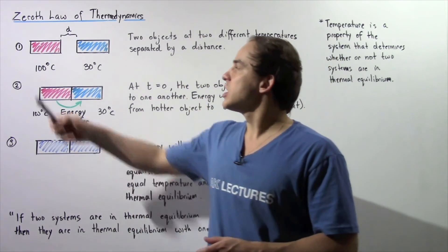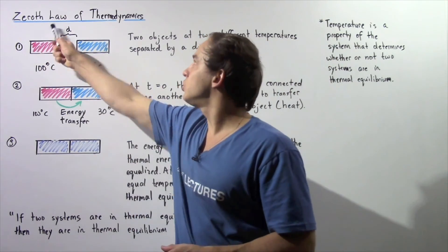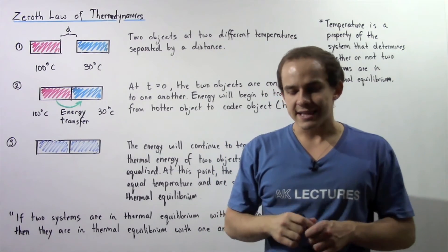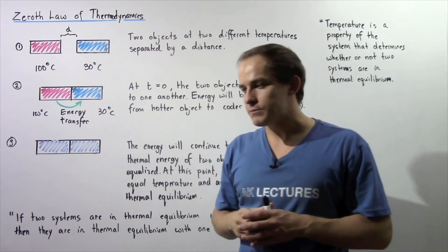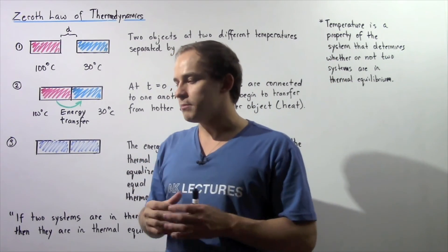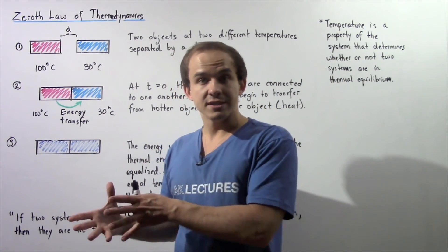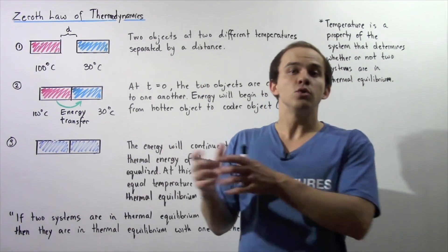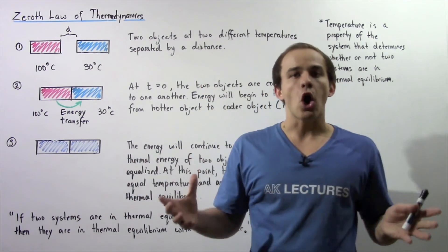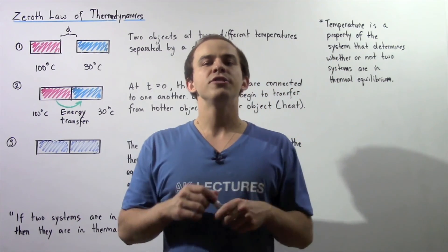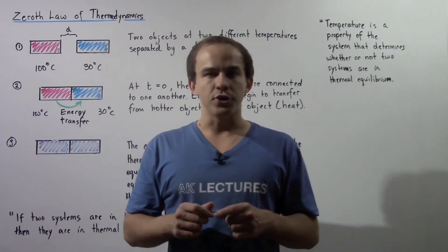This is the zeroth law of thermodynamics: if any two objects are in thermal equilibrium with a third object, those two objects are in thermal equilibrium with one another.